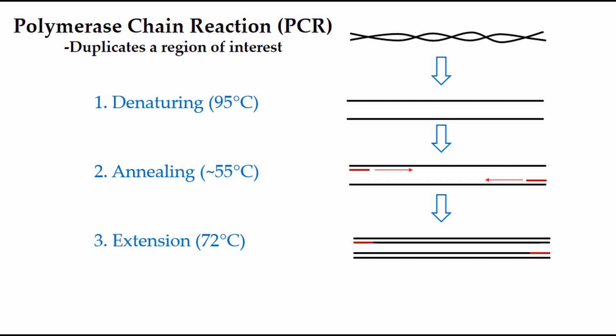This three-step process repeats between 30 and 40 times, exponentially increasing the number of copies of the sequence of interest. The final product of PCR is billions of copies of this specific sequence, which is enough for other applications. In some cases, a cleanup step may be useful to remove excess reagents from PCR.